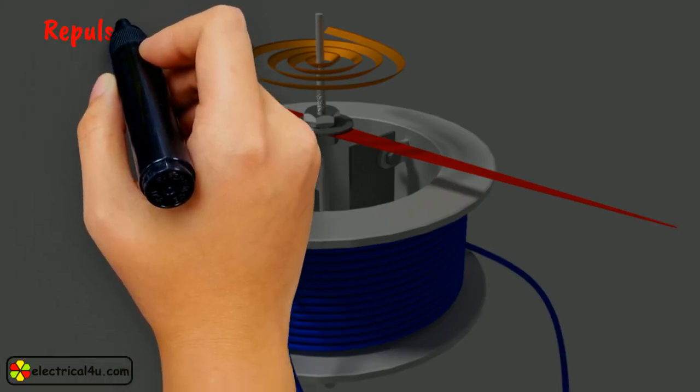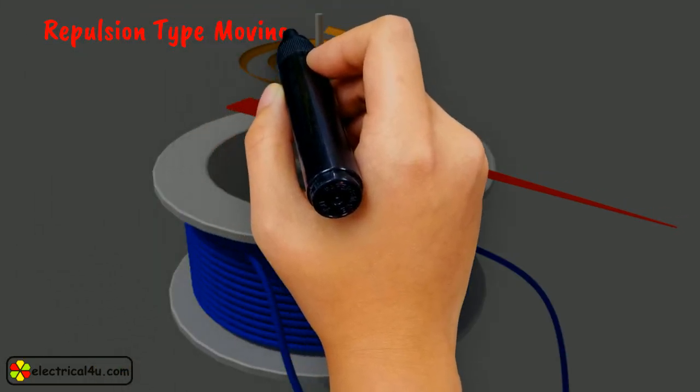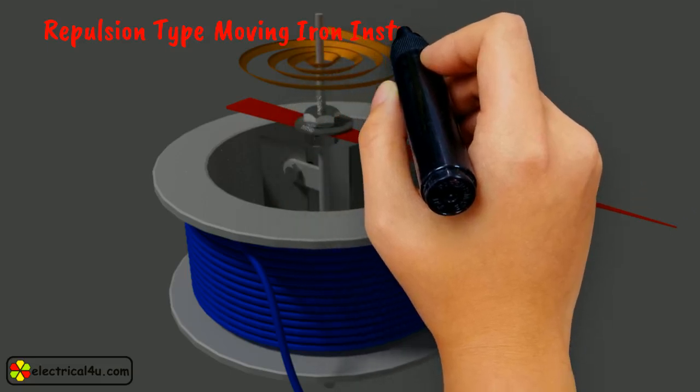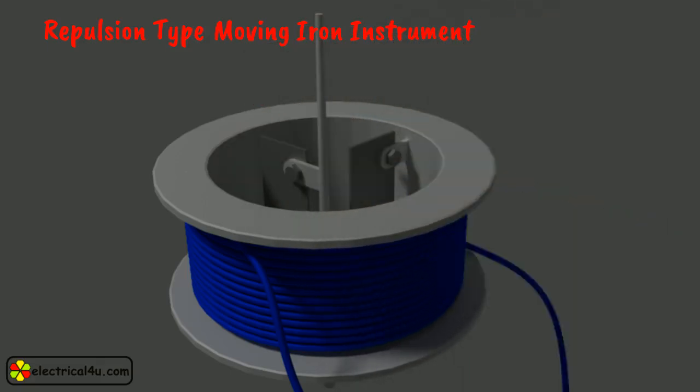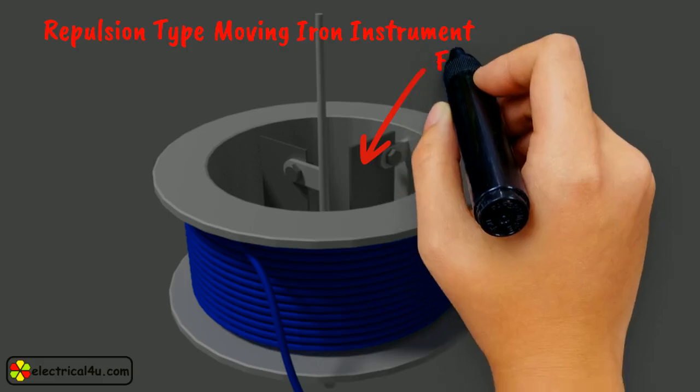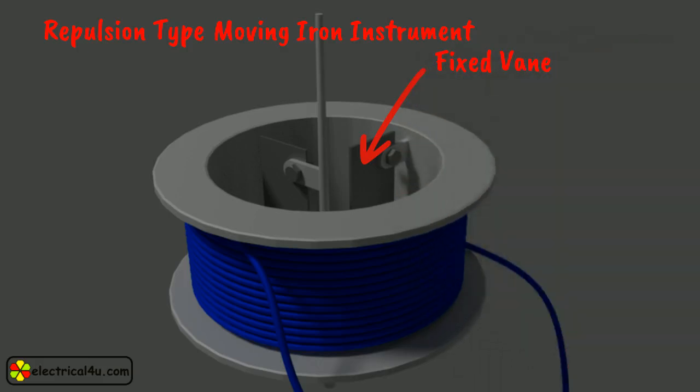Let us discuss repulsion type moving iron instrument. In this type of instrument, two soft iron veins are used, one fixed and attached to the stationary coil while the other is movable and mounted on the spindle of the instrument.